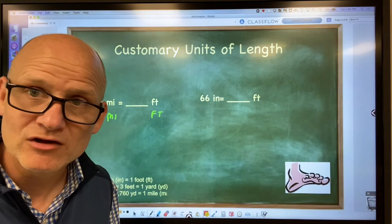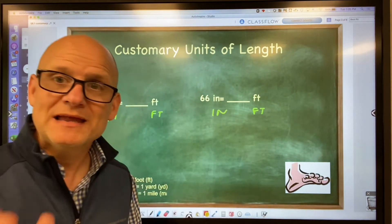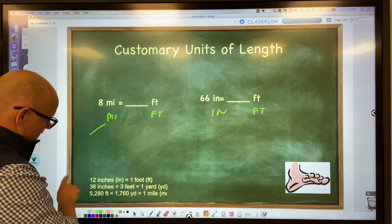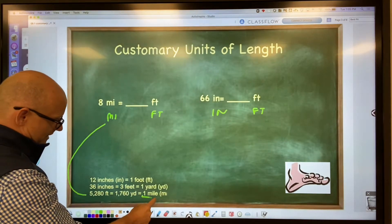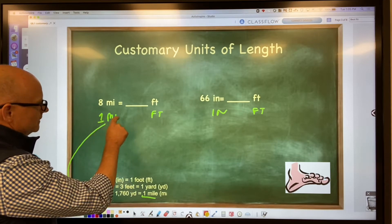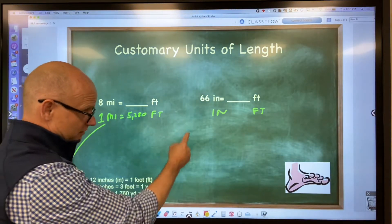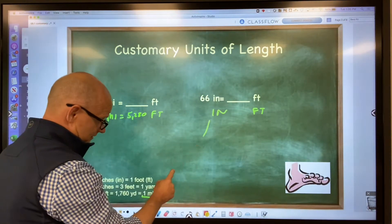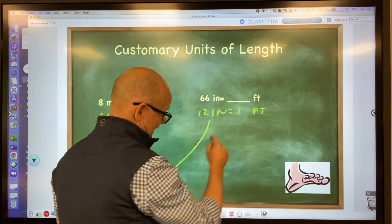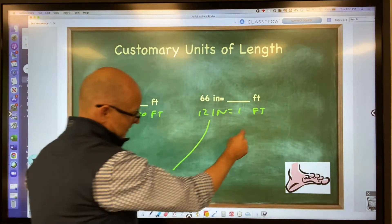Number one: write down the units underneath each other. Mile under mile, feet under feet, inch under inch, feet under feet. Then make the statement true. What do I mean by that? Well, I know if I look at this, there's one mile and 5,280 feet, so I make that statement true. I write one mile equals 5,280 feet. Over here, I make the statement true. I look down here at inches. There's 12 inches in one foot, so I write 12 inches and one foot.